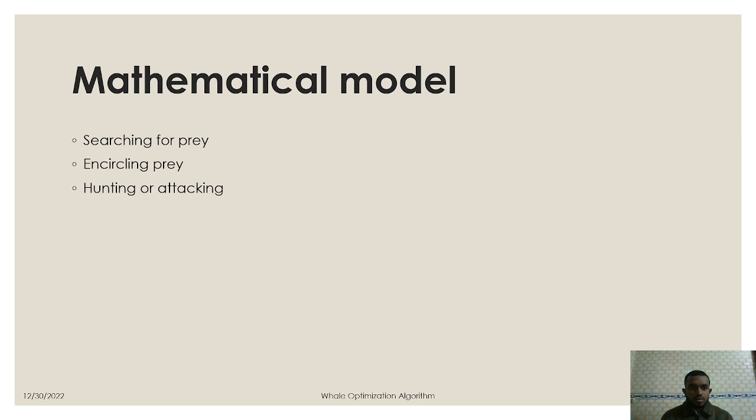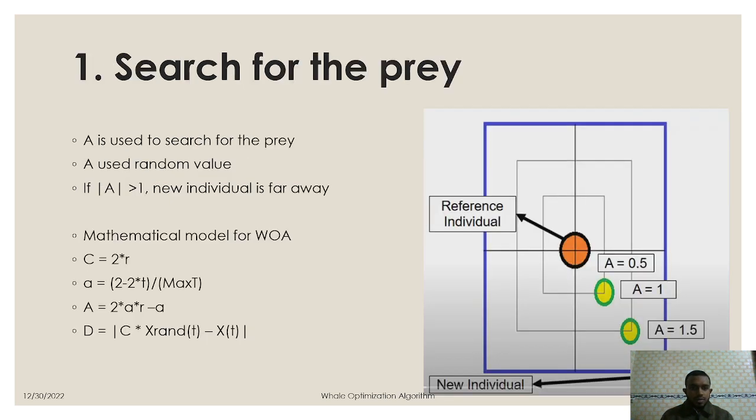So according to this we have here some mathematical model: searching for prey, encircling prey, and hunting or attacking. So in the first step searching for prey where we use a, a coefficient vector, and here we assign random variable in a. If a value is greater than one then the individual is far away, that means the individual is not closer to the new one. So we have to find a new individual.